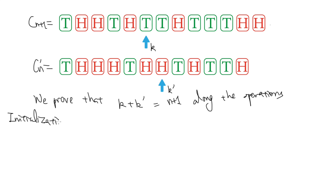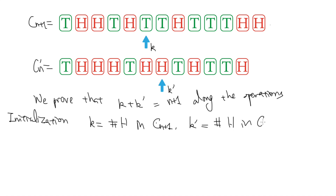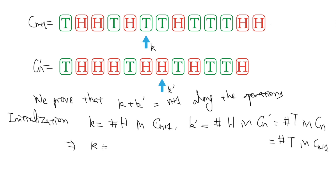Let me briefly explain to you why this is true. First, at initialization, k is the number of heads in cn+1, and k' is the number of heads in cn'. Since we have interchanged H to T in order to obtain cn', this number equals to the number of tails in cn, which is again the number of tails in cn+1 because the last coin is a head. Therefore, k plus k' equals to n plus 1.